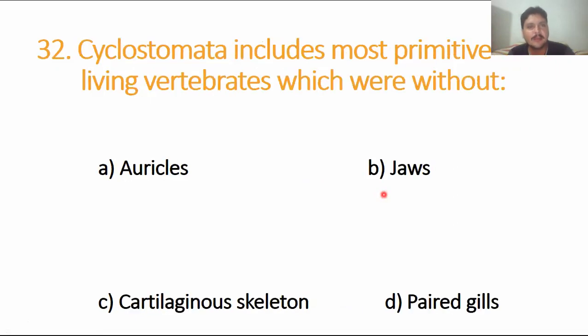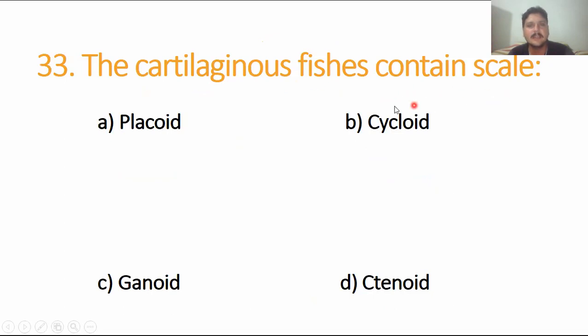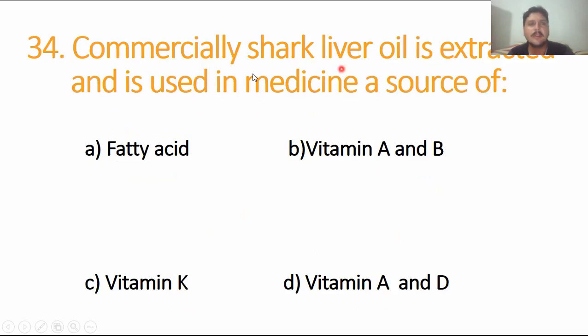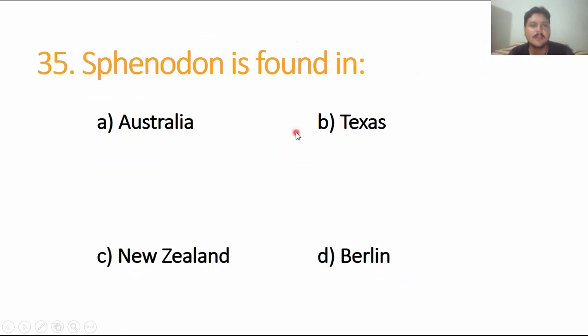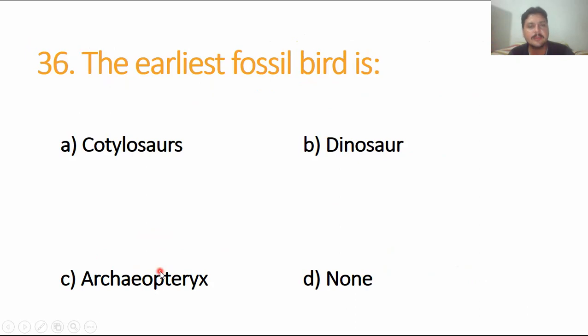Cyclostomes include most primitive living vertebrates which were without jaws. They are jawless, they are primitive fishes, they are agnathan fishes. Option B is the right answer. The cartilaginous fishes contain placoid scales. The rest of the three, cycloid, ctenoid, and ganoid, these are bony fishes' scales. But placoid scales are plate-like scales which are called cartilaginous, sharks, which are called Chondrichthyes. Commercial shark liver oil is extracted and used as medicinal source of vitamin A and vitamin D. Sphenodon is the only living reptile found in New Zealand. The earliest fossil bird is Archaeopteryx, an ancient bird found in the state of Bavaria, discovered in Germany almost 150 million years ago. Option C is the right answer.